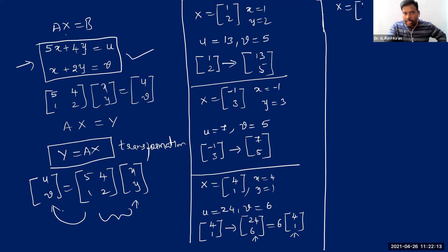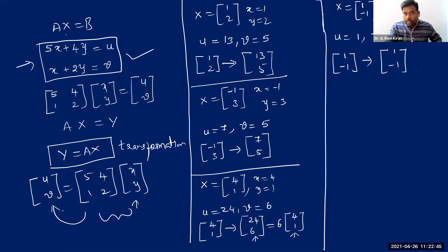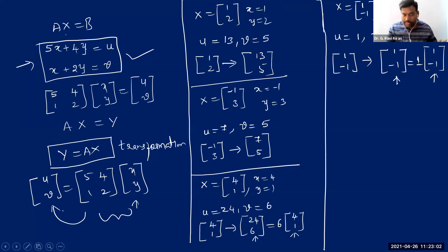If I take capital X equals (1, -1) — small x equals 1, small y equals -1 — then u equals 5 minus 4 equals 1, and v equals 1 minus 2 equals -1. So the vector (1, -1) is again transformed to the same vector (1, -1). We can write this as 1 times (1, -1). The original vector and the transformed vector are in the same direction, and even their magnitudes are equal.